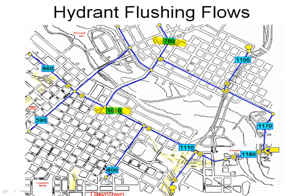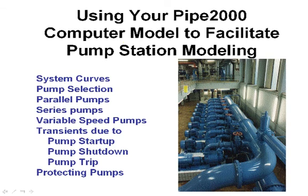This shows you can get 1,000 gallons per minute out of this hydrant, 780 out of another. This will allow you to plan flushing. We also have tools where you can close certain valves and open certain hydrants to determine how much flow you can get out of the system and what velocities you can attain. This has all been automated in PIPE 2000.